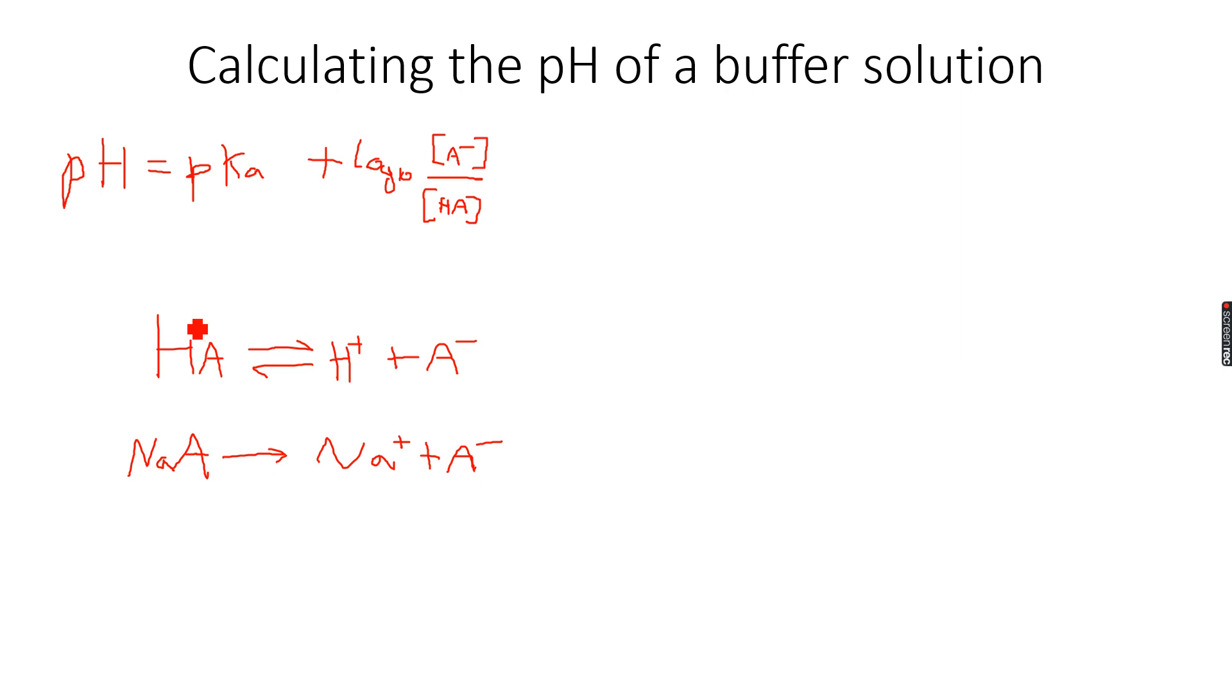So what will happen is that pH will be equal to pKa, which is negative log10 Ka. So if I simplify this, it will be negative log10 Ka plus log10.